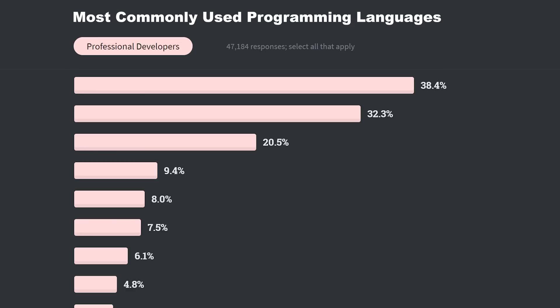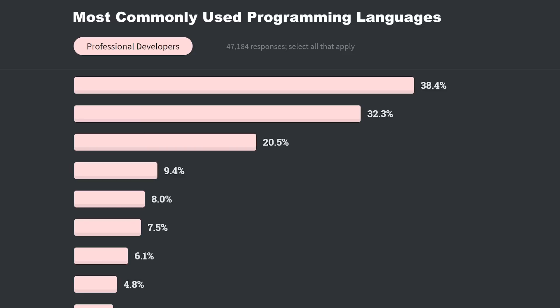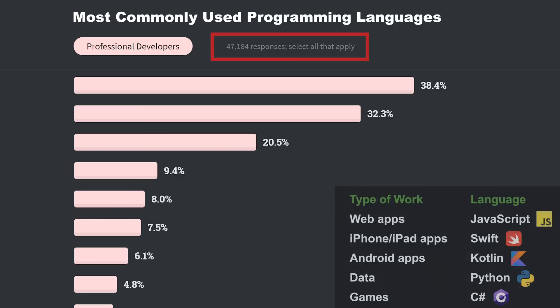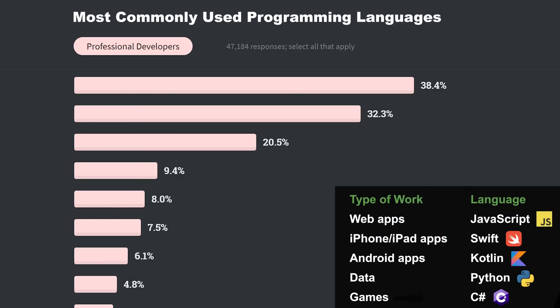One of the most popular questions that gets asked on the survey is: which programming languages do you use? This year, this question got over 47,000 responses. So we're going to take a look at how these languages stack up to each other in this chart. Here we have Swift at 6.1% and Kotlin at 8%. What this means is that 6.1% of the developers they surveyed are using Swift at their jobs, and 8% are using Kotlin.